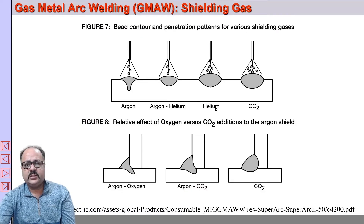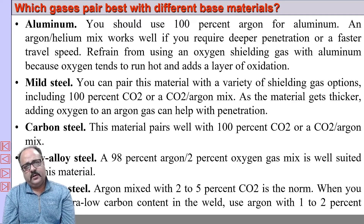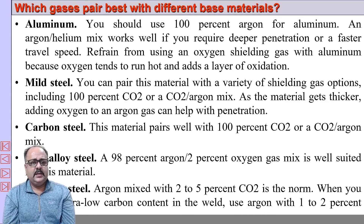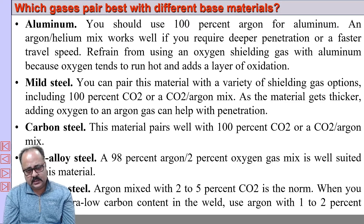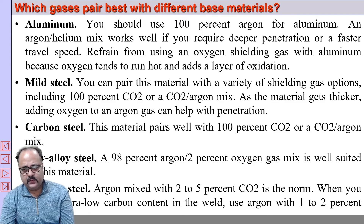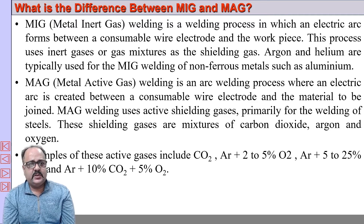The best gas combinations for different materials: aluminum uses 100% argon or argon-helium for deeper penetration and faster welding. Mild steel and carbon steel use 100% CO2 or CO2-argon mix. Low alloy steel uses 98% argon and 2% oxygen. Stainless steel uses argon-oxygen or argon-CO2, with oxygen kept at only 1–2%. MIG refers to metal inert gas welding, while MAG refers to metal active gas welding using a mixture of inert and active gases.